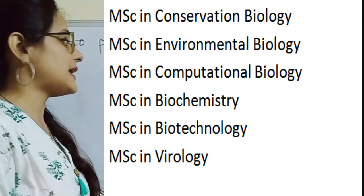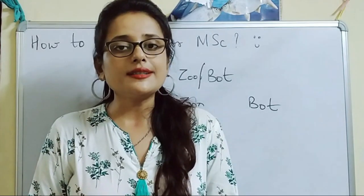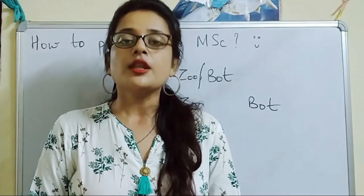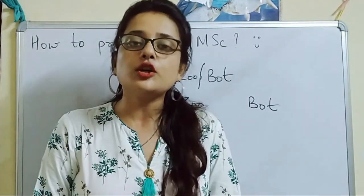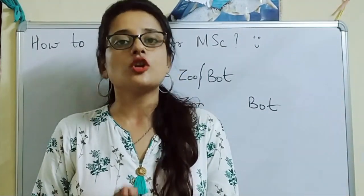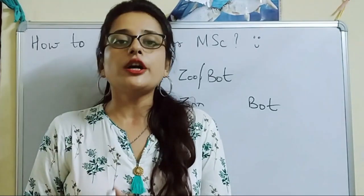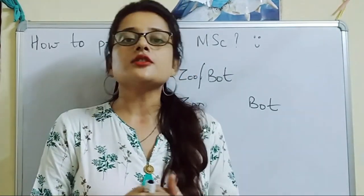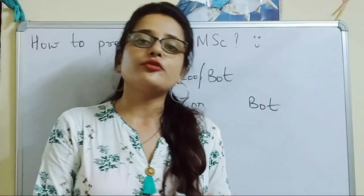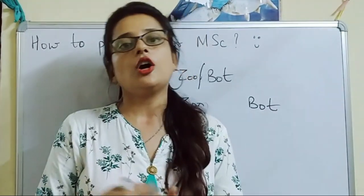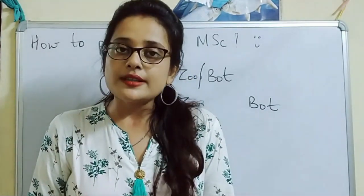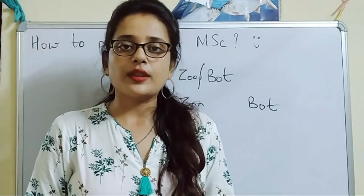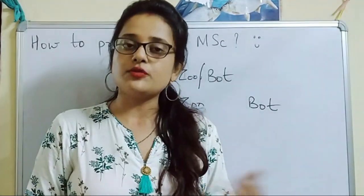After deciding the subject, shortlist at least 10 universities, colleges, or institutes where you want to do your MSc. These can be of national or state level. Decide wherever your interest lies and where you want to go — we will talk about these in the next video, along with job opportunities after MSc.